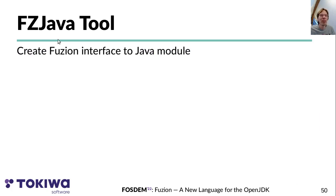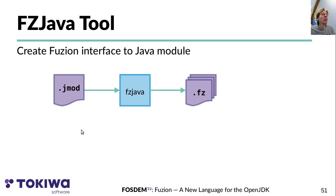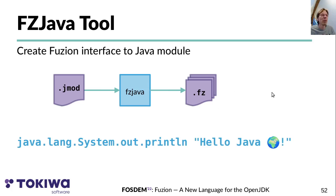To interface Java code from Fusion, there's a tool called 'fz_java', which creates Fusion code for a Java module so you can call into that Java module from Fusion. This tool takes a Java module file and creates Fusion source code to access the code in that module. With it you can, for example, access 'java.lang.System.out' and call a method like 'println' on it — basically accessing the Java world.